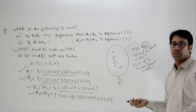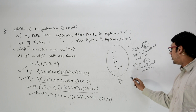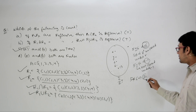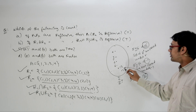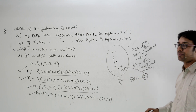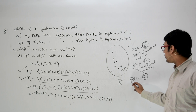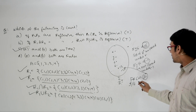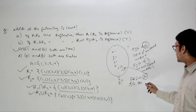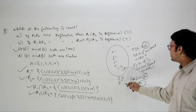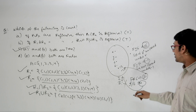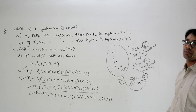If we perform multiplication: 5 × 6 = 30, which lies inside the set of positive integers. So positive integers are closed under multiplication. But 5 ÷ 6 gives a real number (not a positive integer), so positive integers are not closed under division.